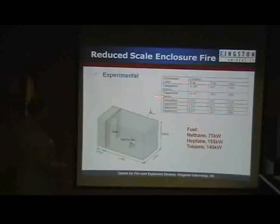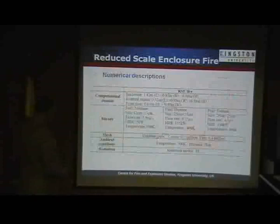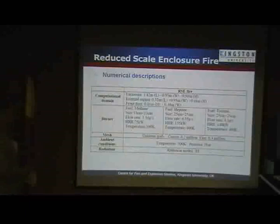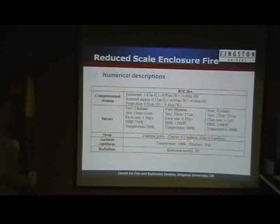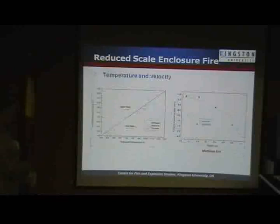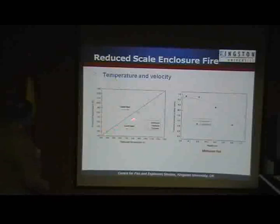Temperature of species measured in different places. This is their numerical description — you can see a uniform grid they're using. They use two grid sizes to do the problem: coarse and fine. Their P1 radiation model, and then methane, heptane, toluene — they compare peak steady-state results. You see temperature over a range of fuels — not so bad. This is 800, this is 800, and this is a 45-degree line. Pretty good. Throwaway velocity — not so bad.